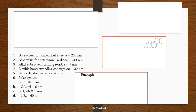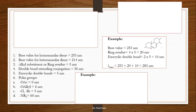Now let's identify one more structure. Looking at it — is it homo or hetero? The rules are shown again for reference. The base value is 253 nm, which means this is a homoannular diene. For ring residues, there are four substituents on this alkene moiety. For exocyclic double bonds: bond one shares a carbon with this ring, so it is exo to it; bond two shares a carbon with another ring, so it is also exo. That gives two exocyclic double bonds. Totaling them up gives the desired lambda max.